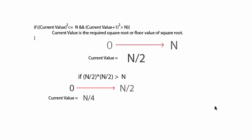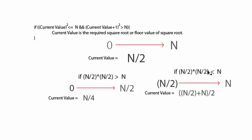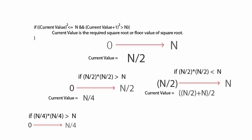If the square of the current value n/2 is less than n, we consider the range from n/2 to n, because the required square root lies in a range greater than n/2. We find the current value as the middle element in this range and simply repeat this process until the condition is matched. When the condition is matched, we mark the current value as the required square root or the floor value of the square root.